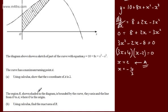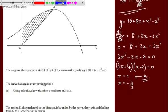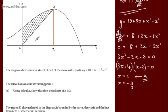We're told the region R, shown shaded, is bounded by the curve, the y-axis, and the line from O to A, where O is the origin. In part B, using calculus, find the exact area of R. I'll drop a perpendicular down and use a triangle approach — finding the area of the right-angle triangle and subtracting it from the area trapped under the curve from 0 to 2. I need the y-coordinate of A.